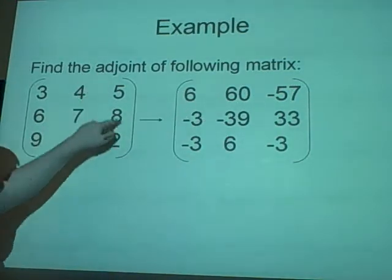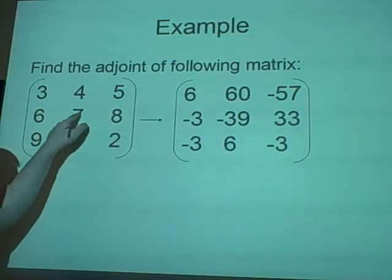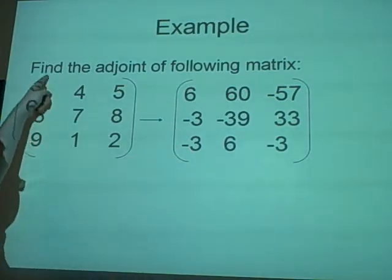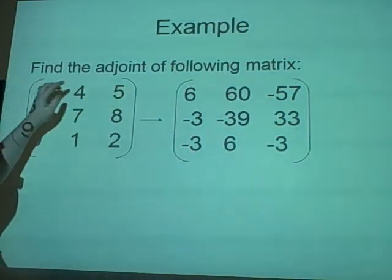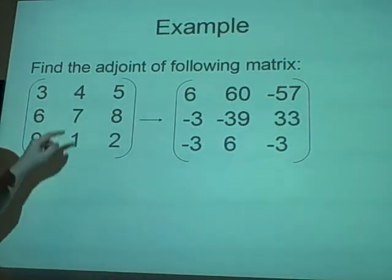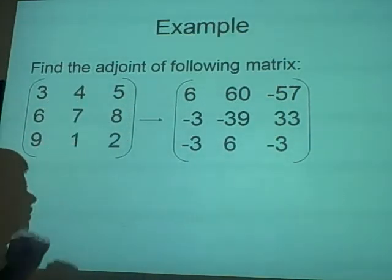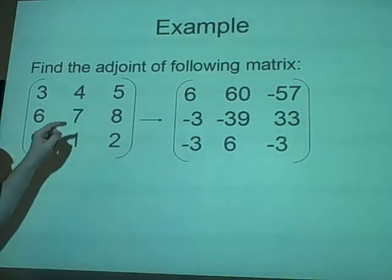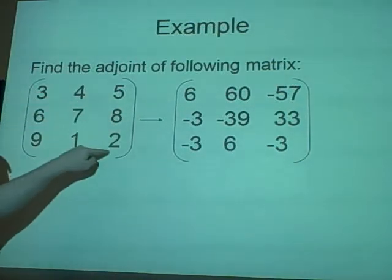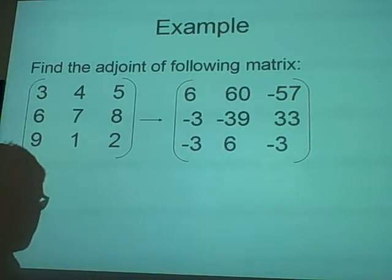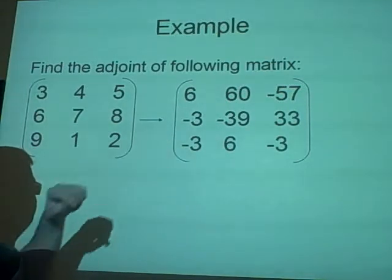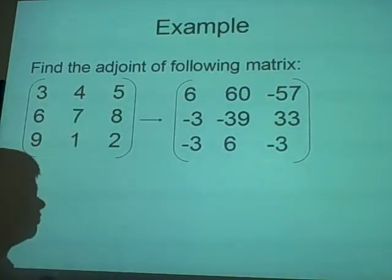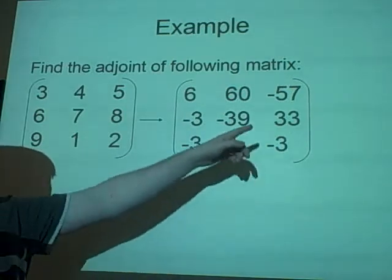The next one is 57 — we cross off here, and we have the determinant of 6 minus 63, which is minus 57. The 3: we cross off here, and we have 8 minus 5 = 3. Because it's a negative position, we have minus 3. The next is 39 in the middle — we've crossed off here and here — so we have 6 minus 45 = minus 39. The next one: we cross off here and here, giving us 3 minus 36 = minus 33. Because we've got a negative position, it's now 33.